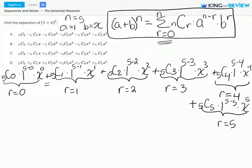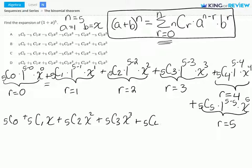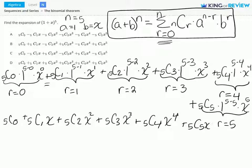So now let's go ahead and simplify this. We get 5C0 plus 5C1 times x plus 5C2 times x squared plus 5C3 times x to the third plus 5C4 times x to the fourth plus 5C5 times x to the fifth.